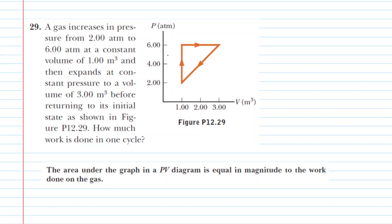In this question, we have a pressure versus volume graph, and we are asked to determine how much work is done on the gas. The key idea to solve that is to understand that the area underneath a PV graph, pressure volume graph, is going to be equal in magnitude to the work done on the gas.